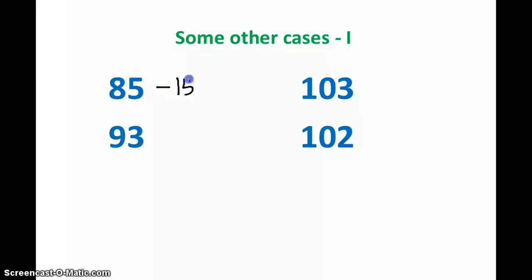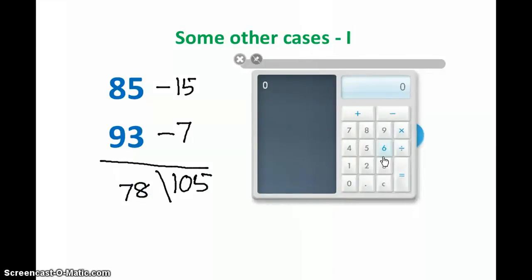85 is 15 less than 100, and 93 is 7 less than 100, which makes it 15 into 7, which is 105. And 85 minus 7, or 93 minus 15, will give you 78. So is the answer 78105? Let's check with the calculator. 85 into 93 gives us 7905. So of course our answer is wrong.